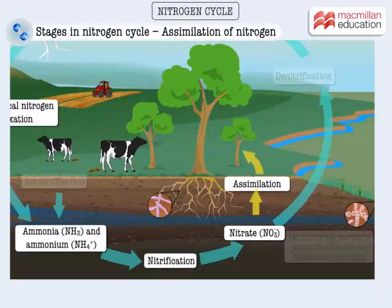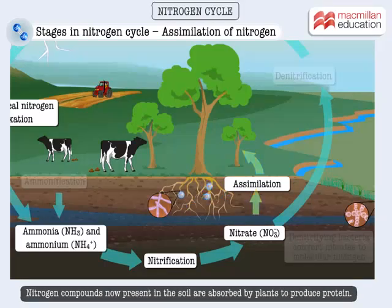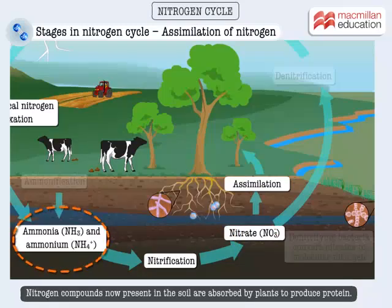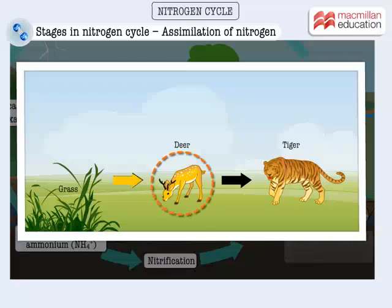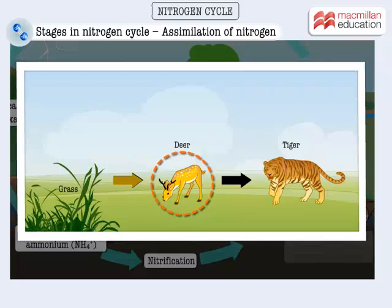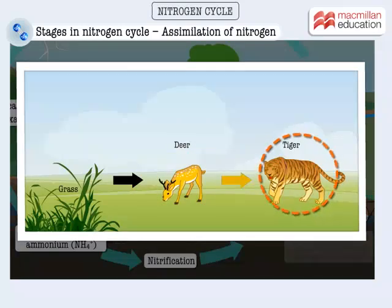The next step is assimilation of nitrogen. Nitrogen compounds containing nitrate and ammonium ions now present in the soil are absorbed by plants to produce proteins. Animals that feed on plants get nitrogen in the form of proteins from plants, while flesh-eating animals get nitrogen from the animals they prey on.